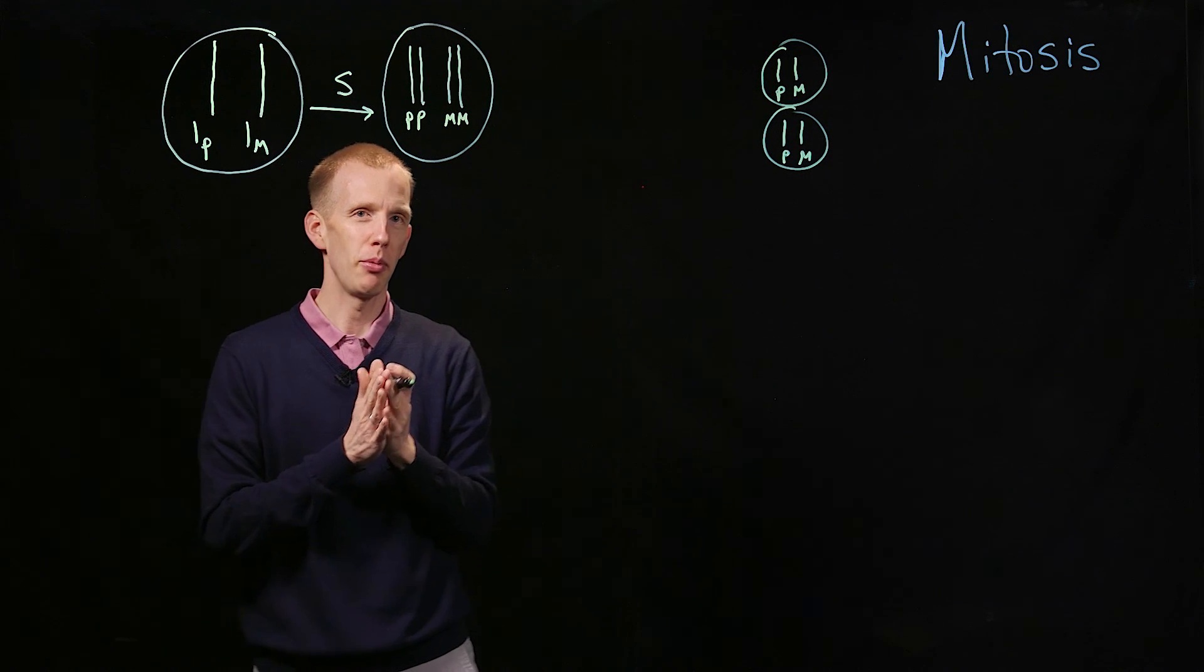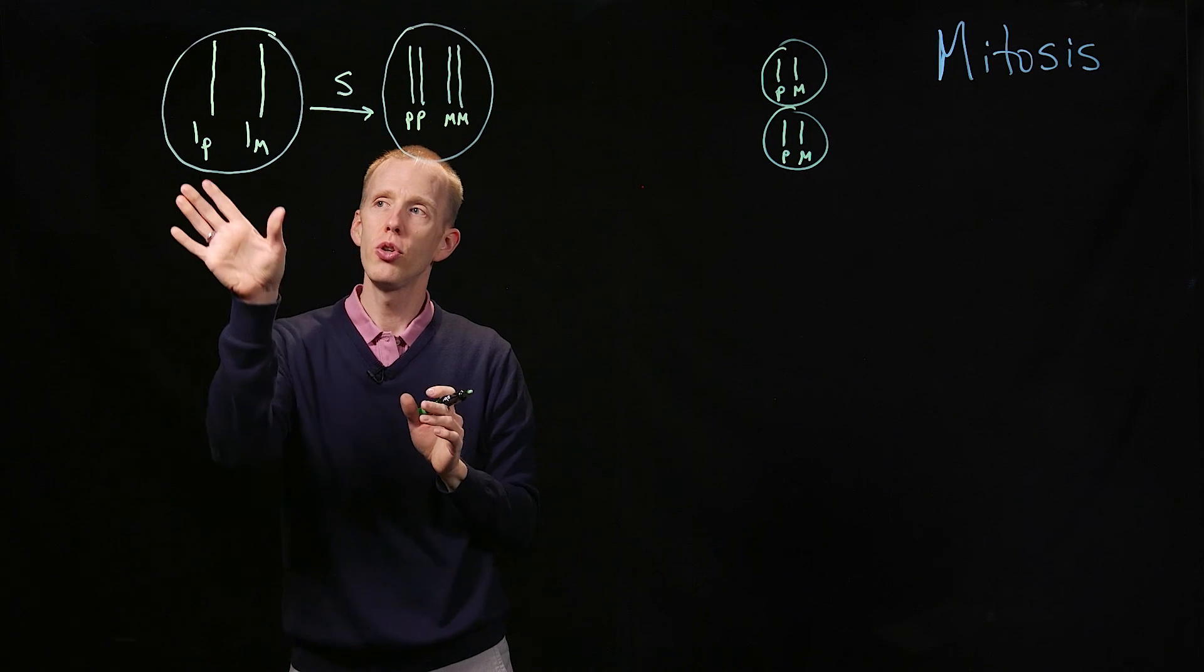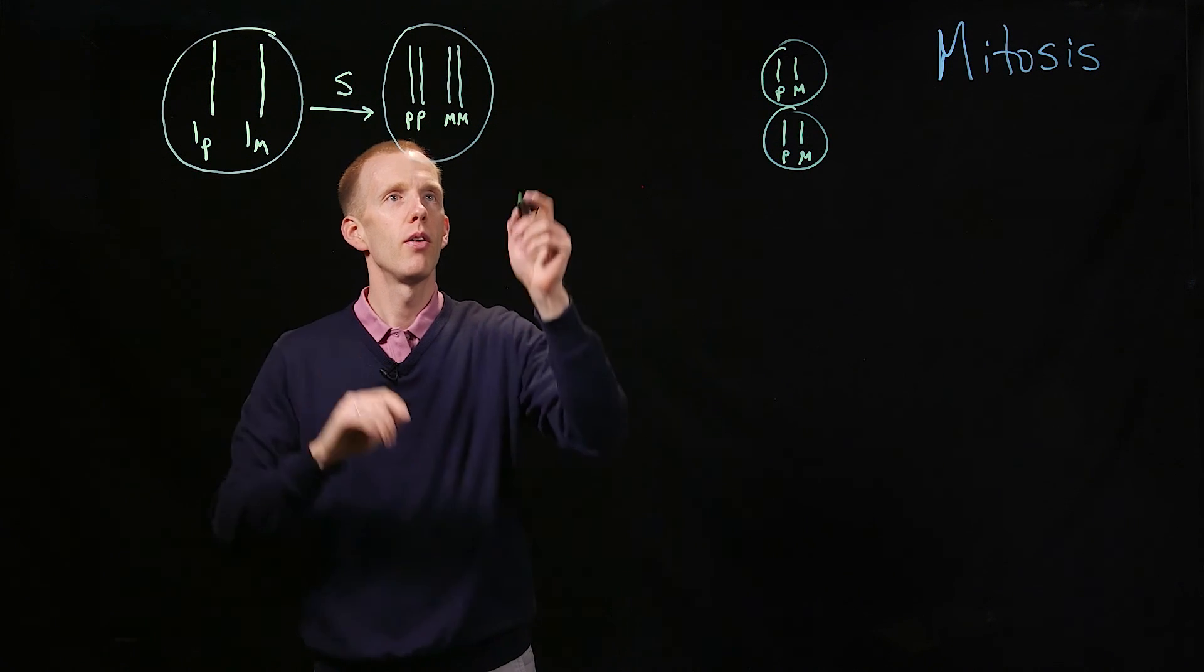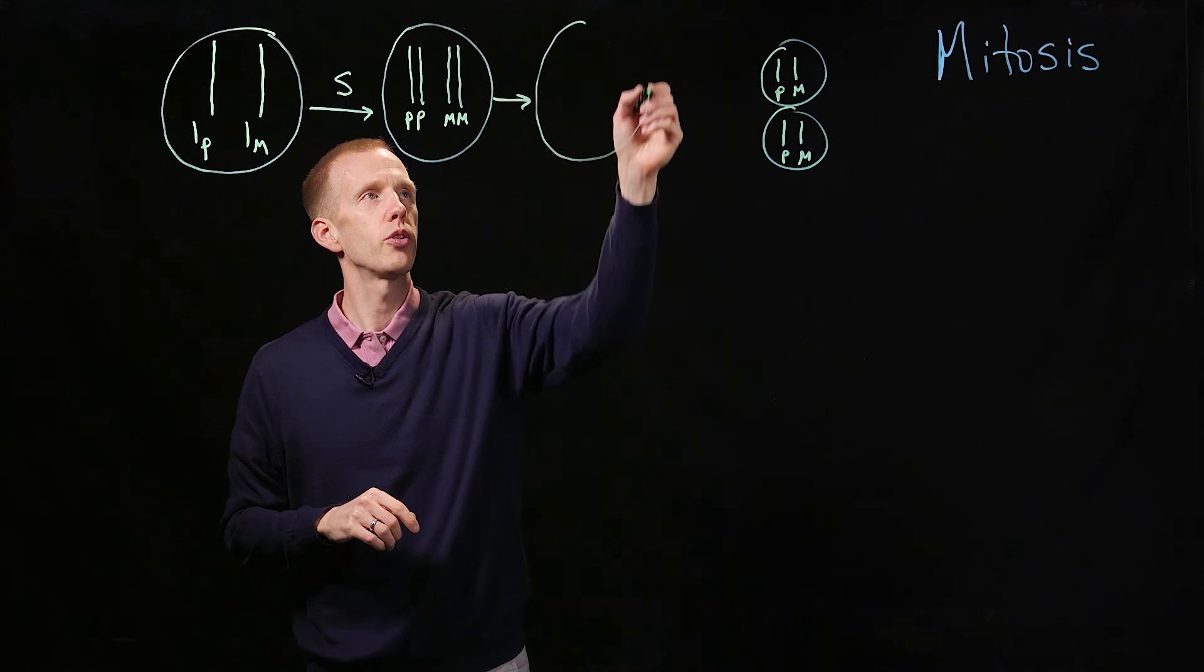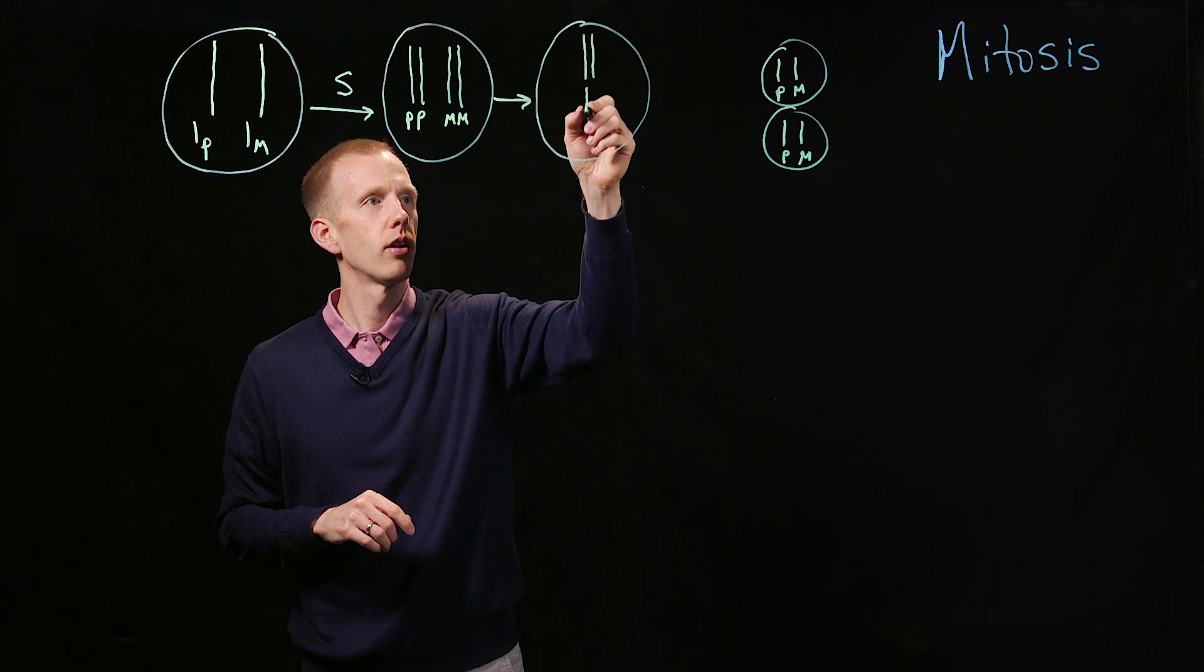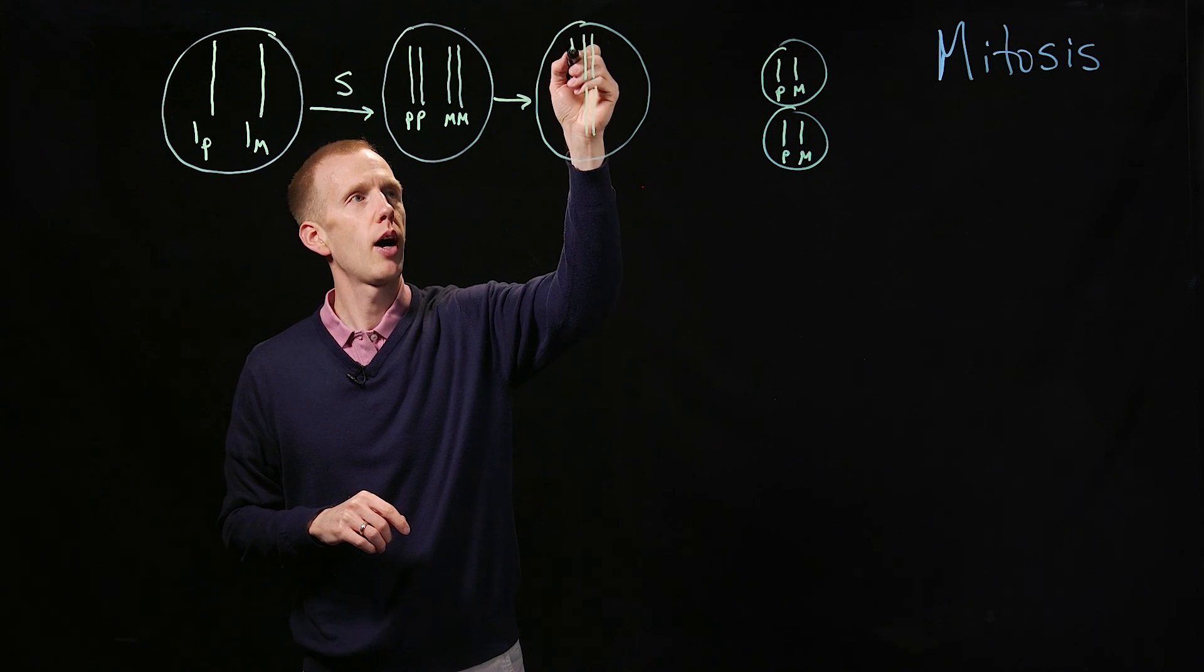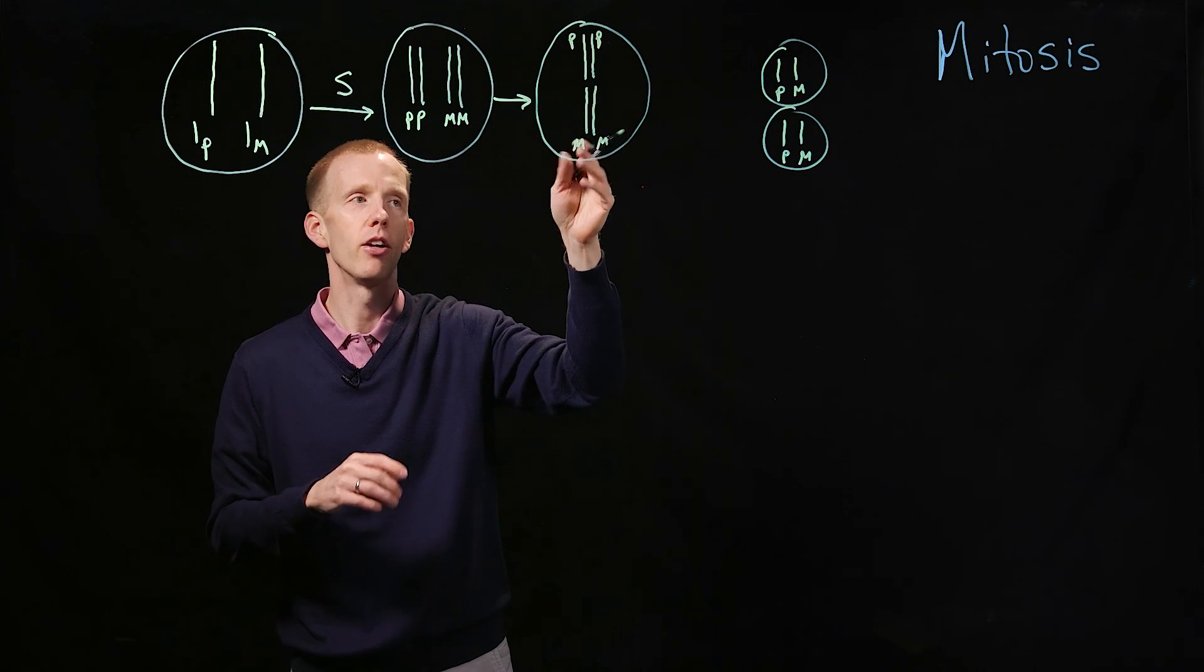And what's going to happen during mitosis? What's the goal? We want to make two cells that have the identical genotype to the one we started with. So the process of mitosis involves those chromosomes lining up during metaphase on the metaphase plate, where we have the two copies of paternal and two copies of maternal end-to-end.